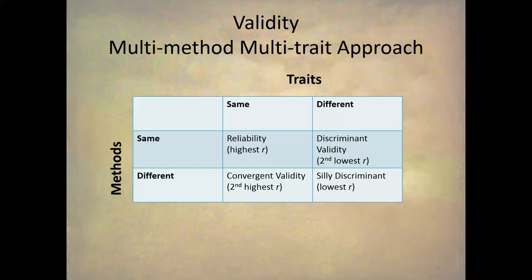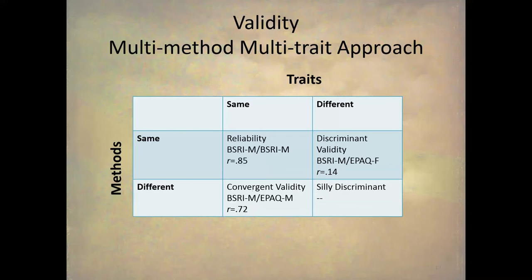If we find discriminant validity — a low correlation — and convergent validity — a high correlation — then we say that this is a valid test. For example, when we correlate the BEM Sex Role Inventory masculine scale with itself, we get a correlation of 0.85.